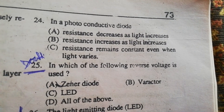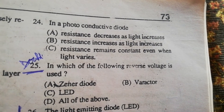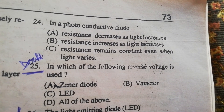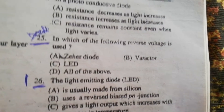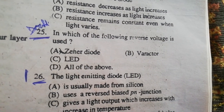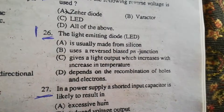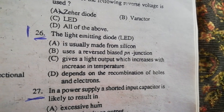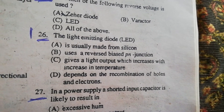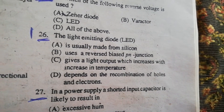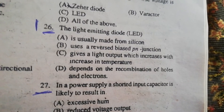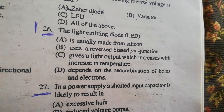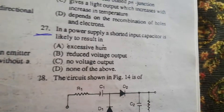In a photoconductive diode, resistance decreases as light increases. Regarding the reverse voltage of a Zener diode — the Zener is used in that application. A light emitting diode is not made of silicon; it is made of gallium phosphide. If the LED temperature increases, it will damage the LED, so options C or D would be correct since the other options are not appropriate.